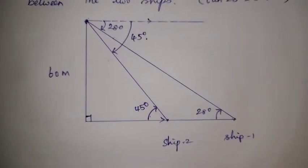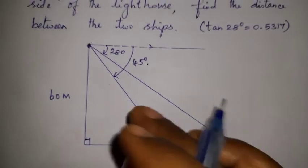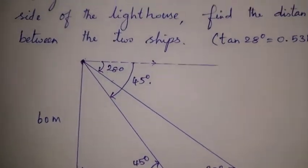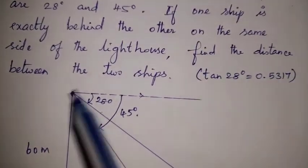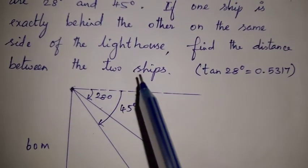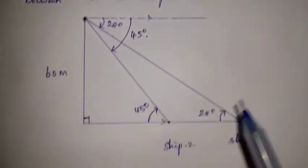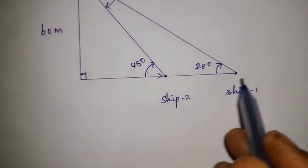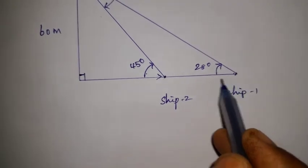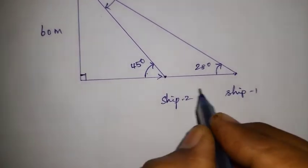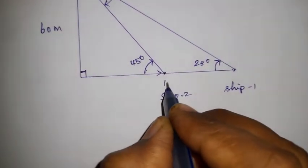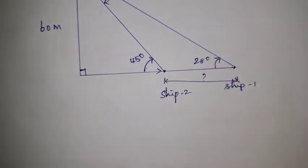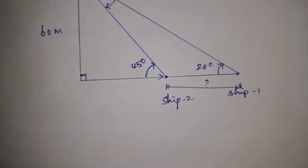Now mark the angles in the diagram. We need to find the distance between the two ships — ship 1 and ship 2. This distance is the question mark we need to solve for.